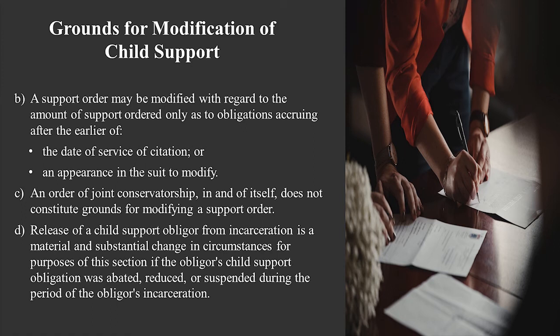As for filing a modification and attempting to go back in time to get some form of arrearage or retroactive support — this is generally prohibited from the date of the original order up until the filing of the modification. So if you had a final order entered in 2017 and in July 2021 you file a modification, you cannot ask for retroactive support or increase it from the date of the original order forward. The way the law works is it's the date of the filing of the modification, or the service or entry of the obligor in the case, from which date forward you look at an increase.